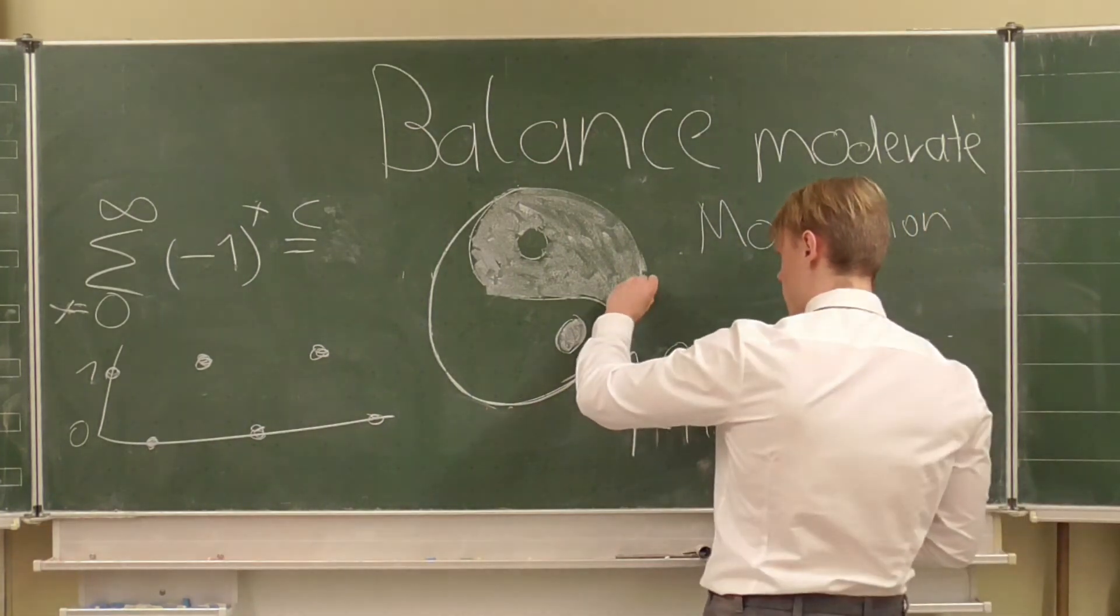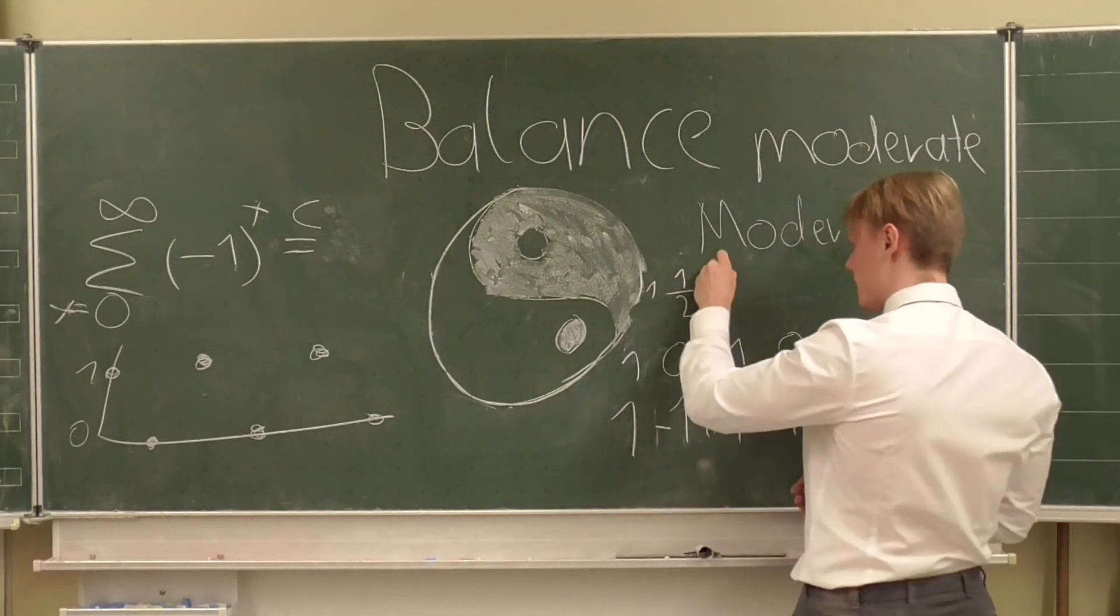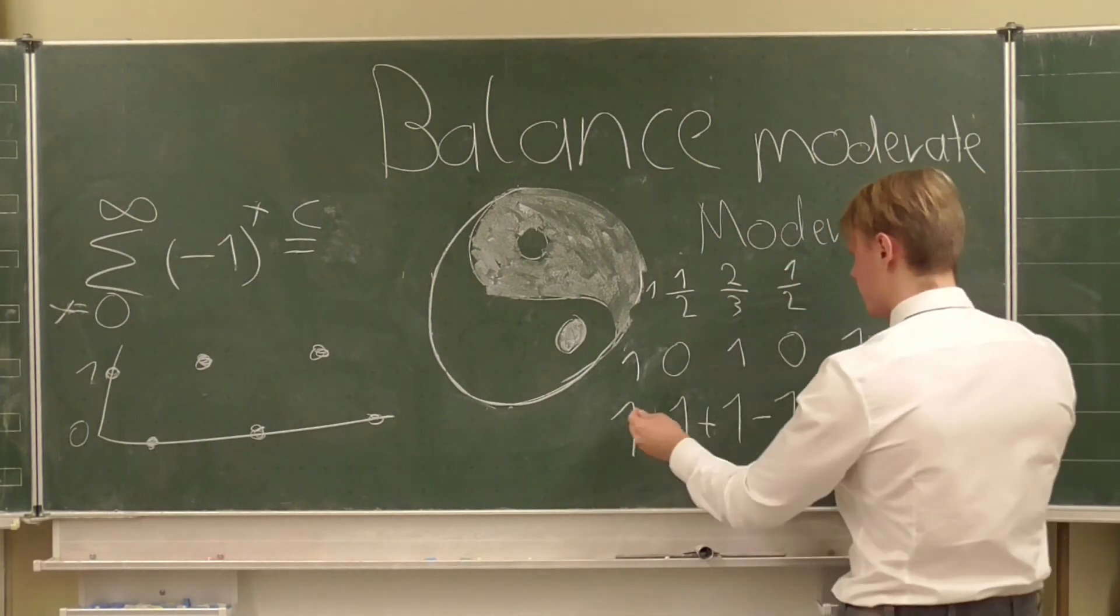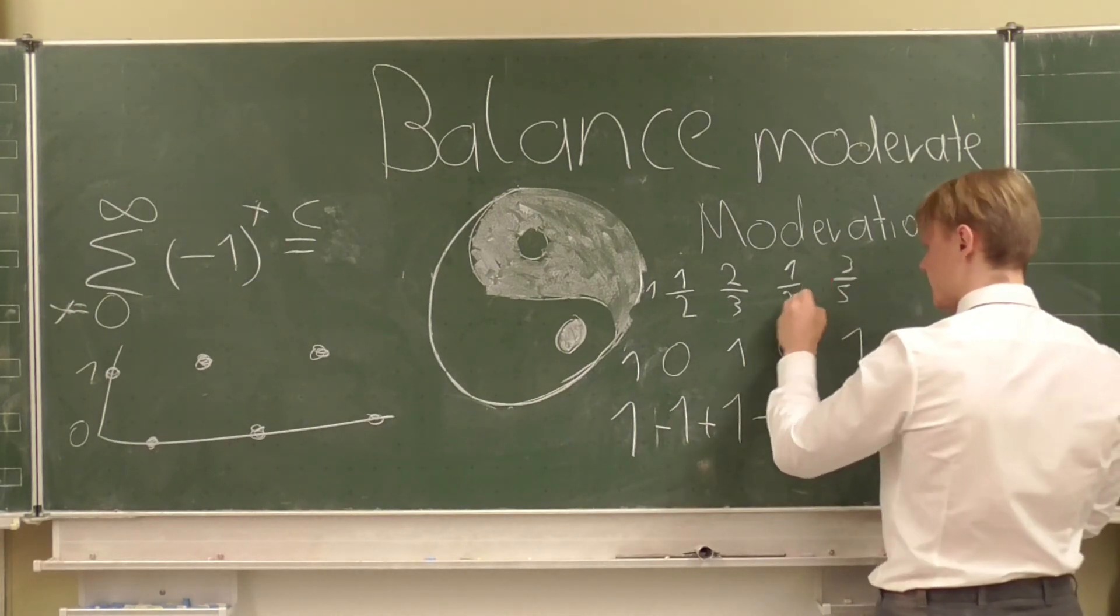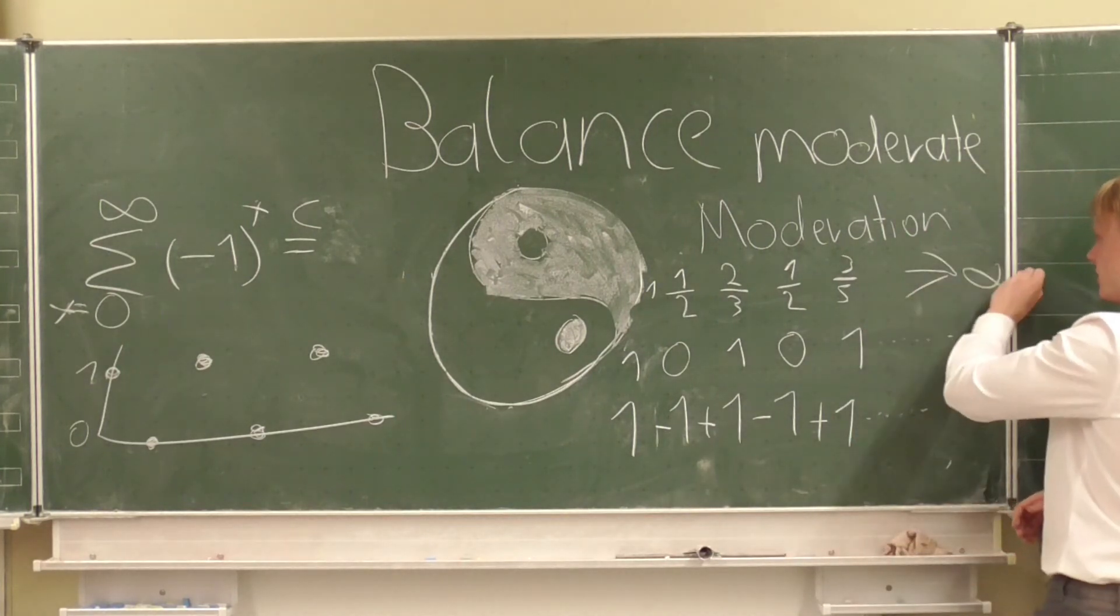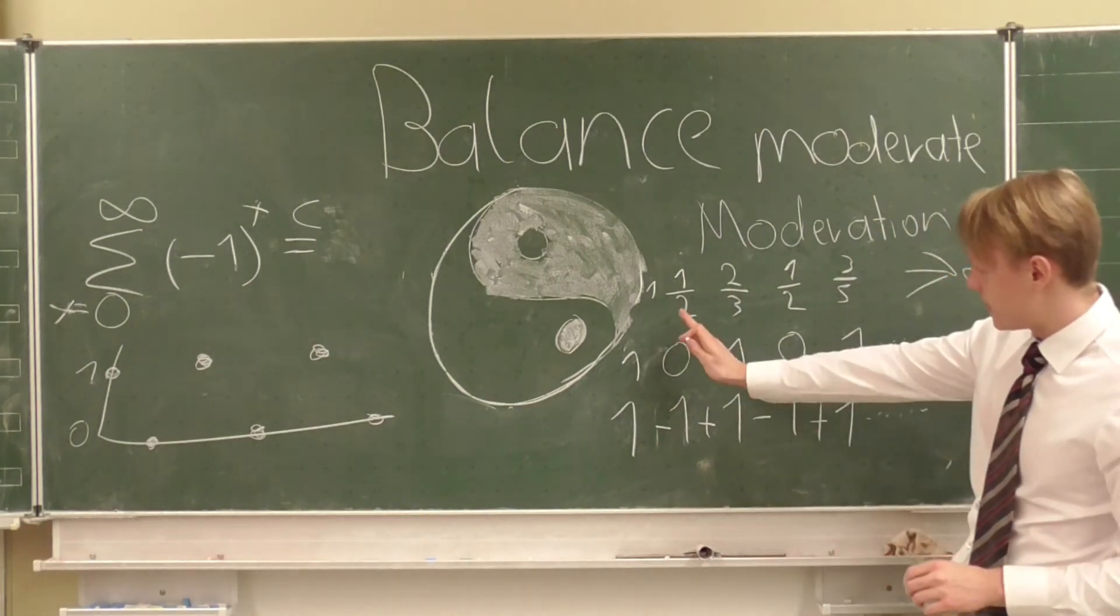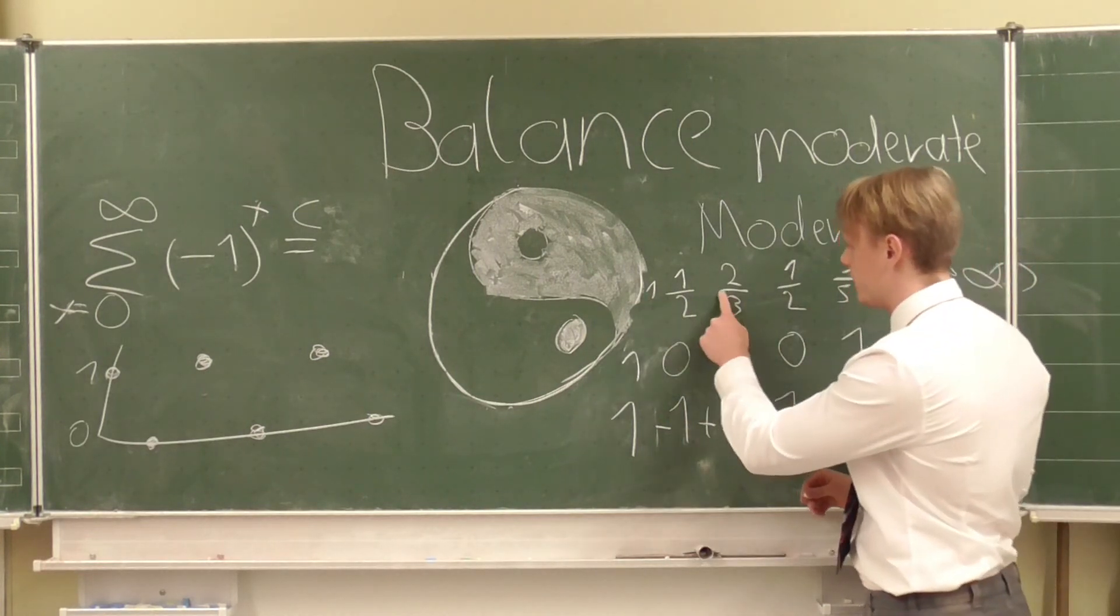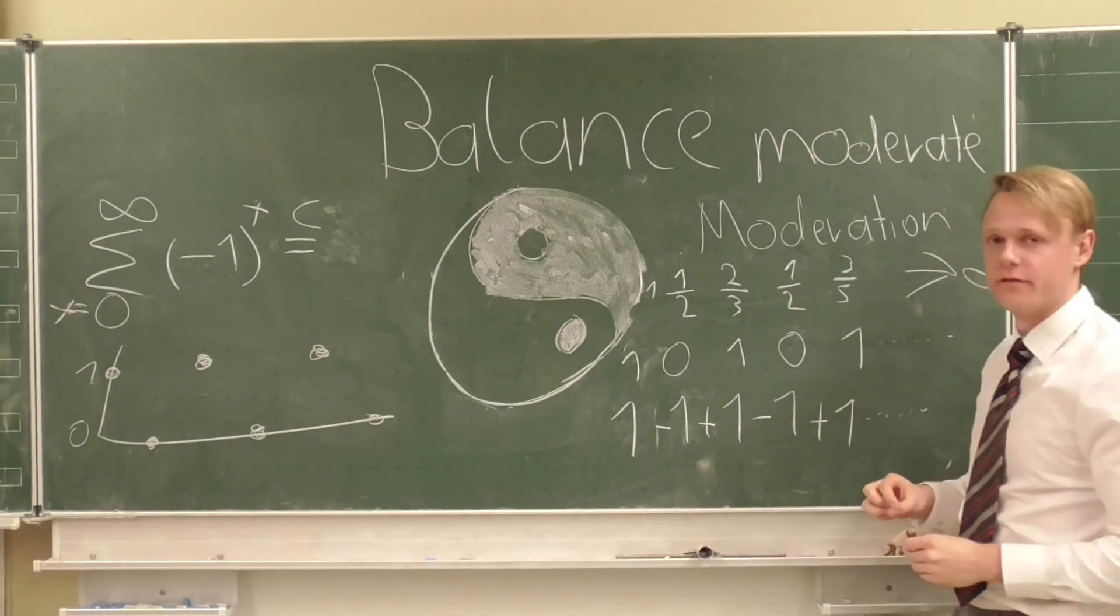At first we have one and secondly we have one half and then here we have two thirds and then here we have one half again and then here we have three fifths and so on and so forth. If we continue this up until infinity we can already see here that every other column is going to be one half and the other value is going to go down until it hits one half as well.